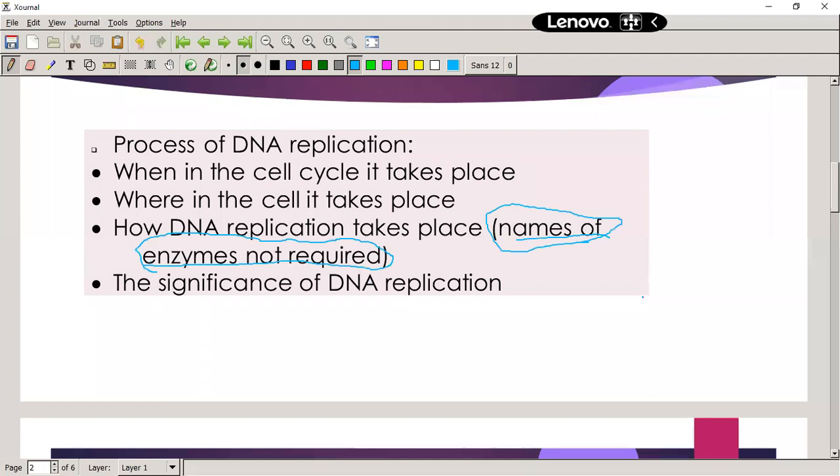This is what CAPS needs you to know. It needs you to know when in the cell cycle it takes place, interphase. Where, the nucleus. How it takes place: so unwind, unzip, loose nucleotides, two strands that are identical to the original strand. And then the significance of DNA replication.